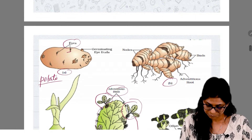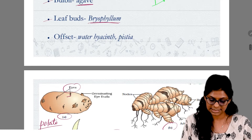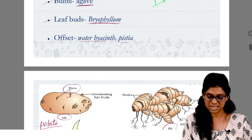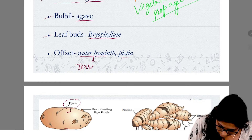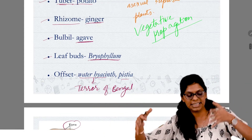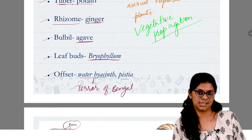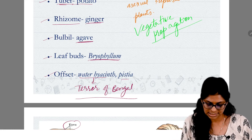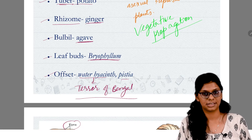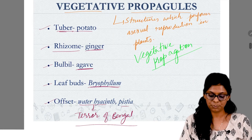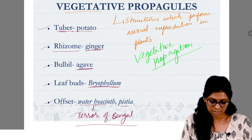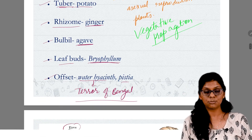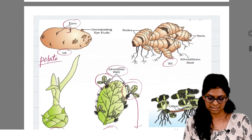Last is your offset, which we get from water hyacinth. Water hyacinth is known as the Terror of Bengal — it is a weed that spreads, and its propagule is the offset. So, the vegetative propagule structures are: tuber in potato, rhizome in ginger, bulbil in agave, leaf buds in bryophyllum, and offset in water hyacinth.